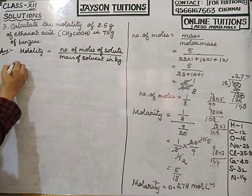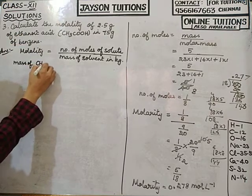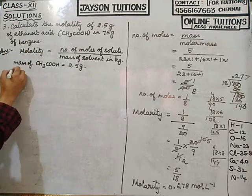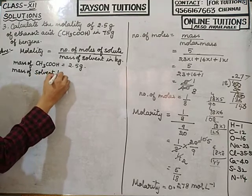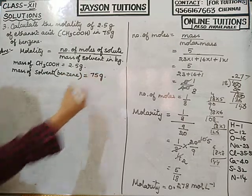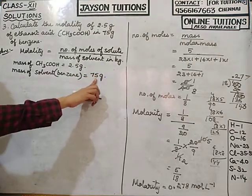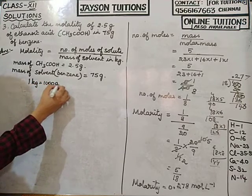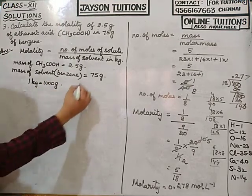What is given: mass of solute (ethanoic acid) = 2.5 grams; mass of solvent (benzene) = 75 grams. But the formula requires mass of solvent in kilograms. Since 1 kg = 1000 g, I divide 75 by 1000 to convert grams to kilograms.